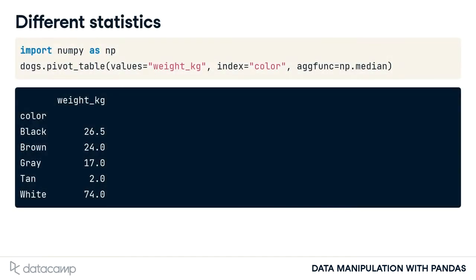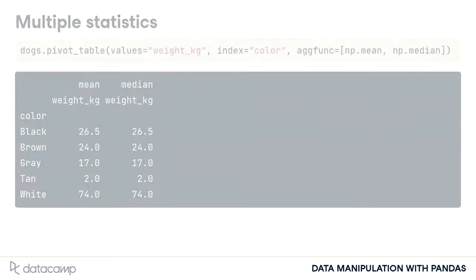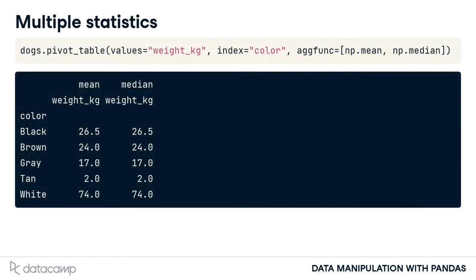If we want a different summary statistic, we can use the aggfunc argument and pass it a function. Here, we take the median for each dog color using NumPy's median function. To get multiple summary statistics at a time, we can pass a list of functions into the aggfunc argument. Here, we get the mean and median for each dog color.